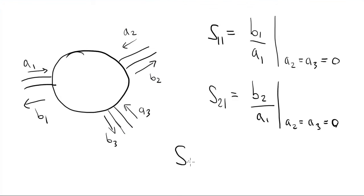The general expression here is S, NM, where N is the row and M is the column. Basically, it's what comes out of the row port over what goes in the column port.